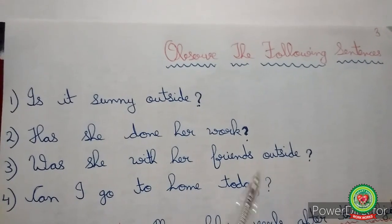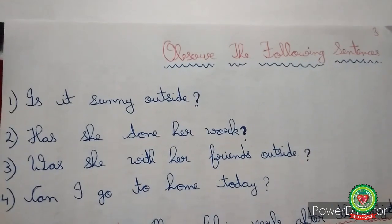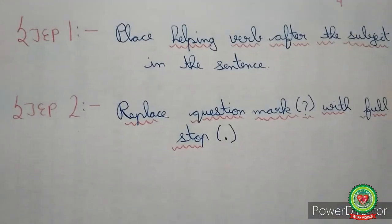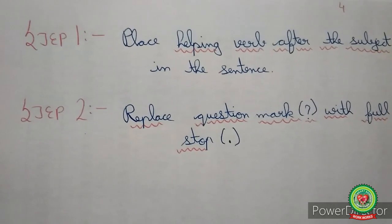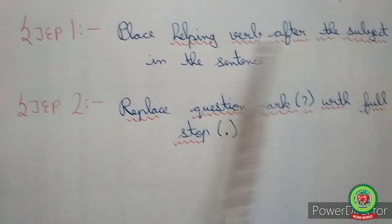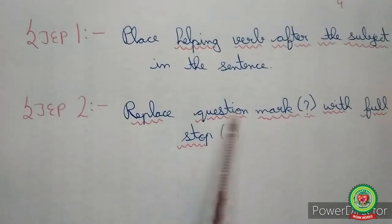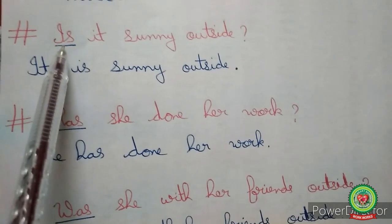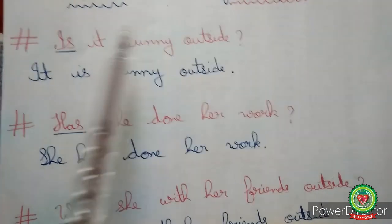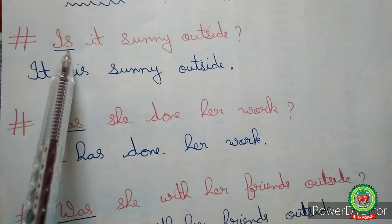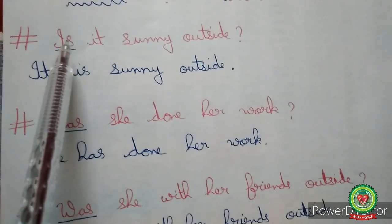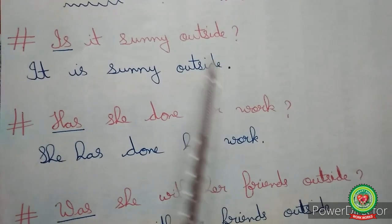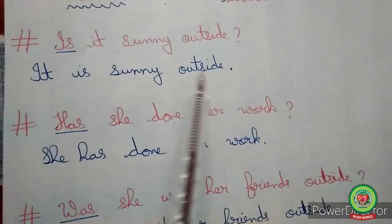We will convert these interrogative sentences into simple statements by placing the helping verb after the subject and replacing the question mark with a full stop. See the first sentence: 'Is it sunny outside?' The helping verb 'is' is present in the beginning, so we place 'is' after the subject 'it' and replace the question mark with a full stop. The sentence becomes: 'It is sunny outside.'